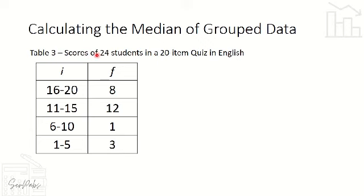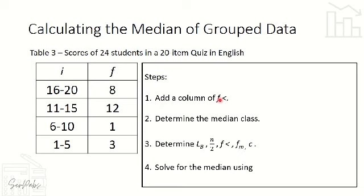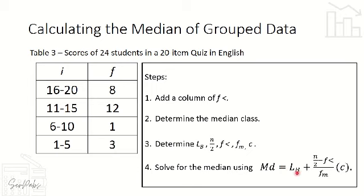Table 3 shows scores of 24 students in a 20-item English quiz. To review the steps: Step 1, add and fill out the F less than column. Step 2, determine the median class using total frequency divided by 2. Step 3, identify L sub B, N over 2, F less than, F sub M, and C. Step 4, solve for the median using the formula. Table 3 is left as an exercise — please comment your answer below. See you in the next video!